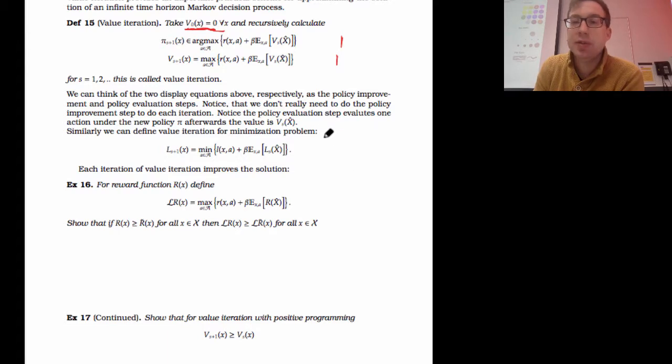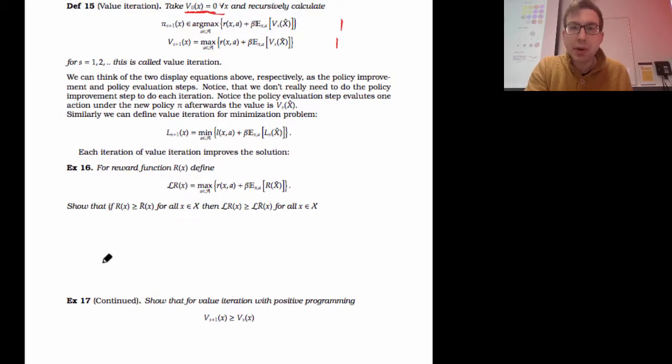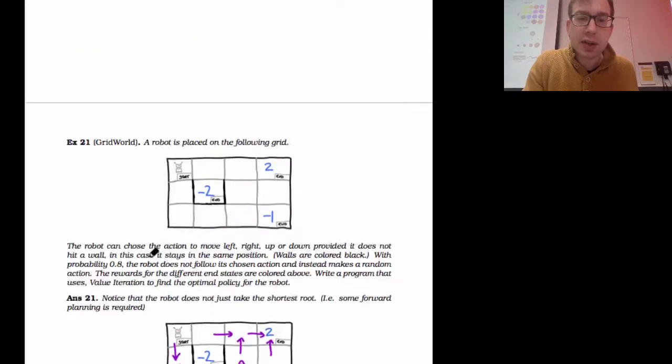We can also define this for a minimization problem. Now, what's going to happen is if I keep doing this, these values hopefully are going to converge. So I just iteratively keep letting my new value v of s plus one be the maximum over the next reward plus the previous value function of where I end up, and just keep iterating on and on. Let me check how we're doing for time. I'll probably start on the proof of this tomorrow, but what I'll show you is a little bit what that looks like. I'll show you the example at the end.